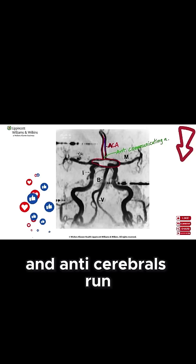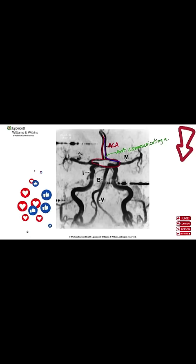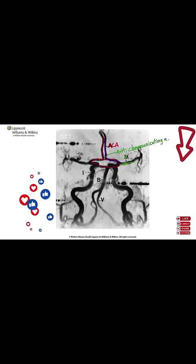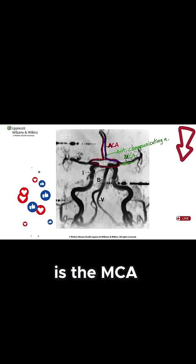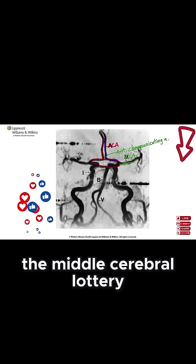The anterior cerebrals run all the way back to here, which means that this is the MCA — the middle cerebral artery.